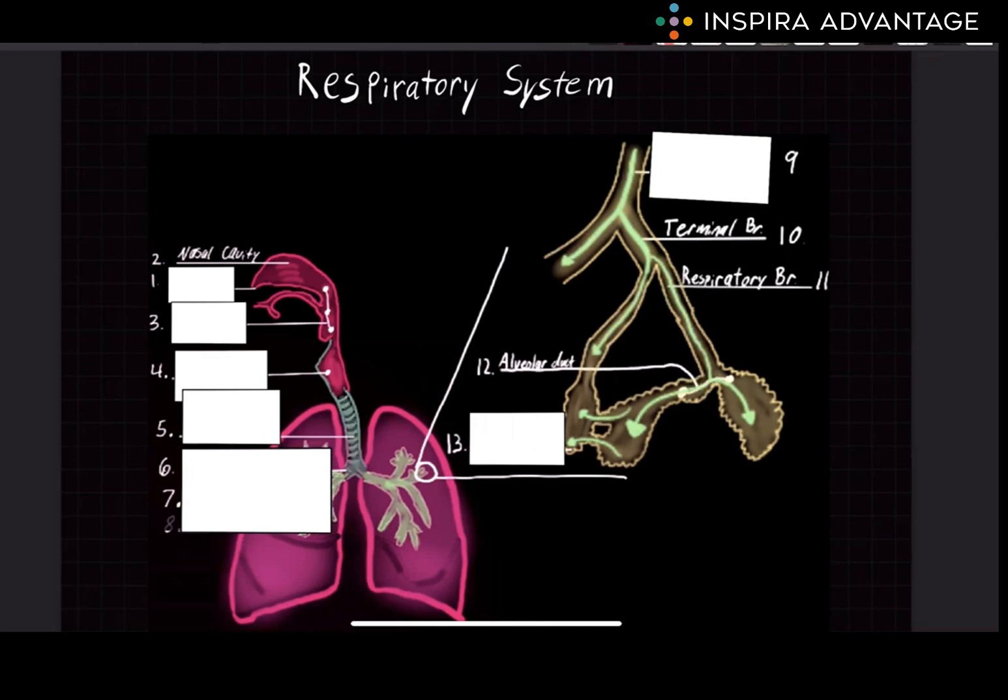The respiratory system is a vital system in the human body that is responsible for exchanging gases, specifically oxygen and carbon dioxide, between the body and the environment. It plays a crucial role in maintaining homeostasis or balance within the body.